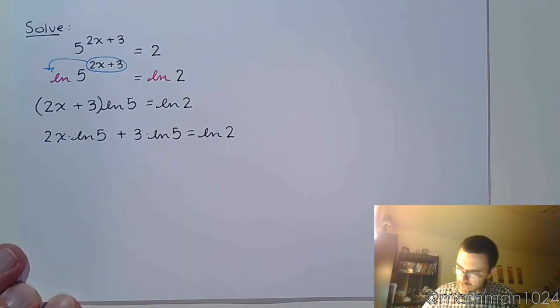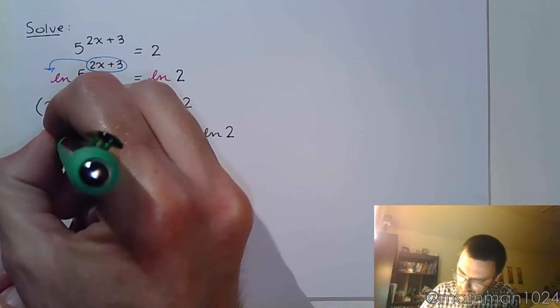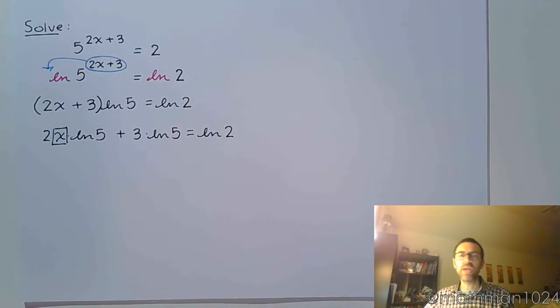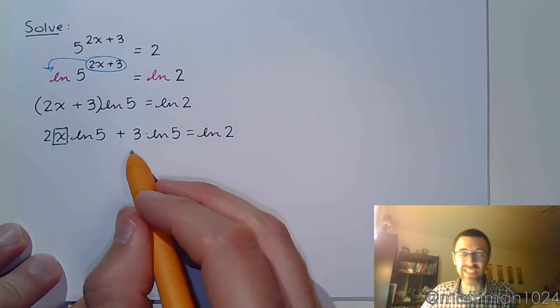Now, if you notice, this is the only place where we see x. Everything else is just a number. Even if it's inside of a natural log, that is still just a number. So let's start peeling away these layers, starting with the stuff that's not even connected to the x.